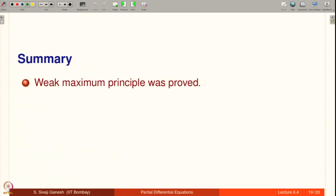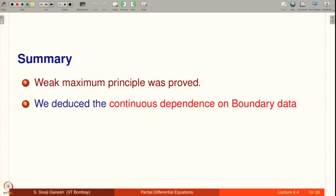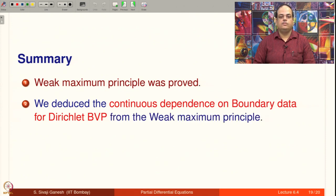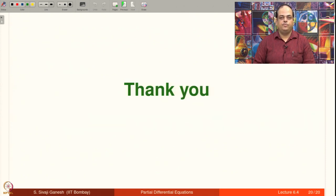Summary: the Weak Maximum Principle was proved, and we deduced continuous dependence on boundary data for the Dirichlet boundary value problem from the Weak Maximum Principle. Thank you.